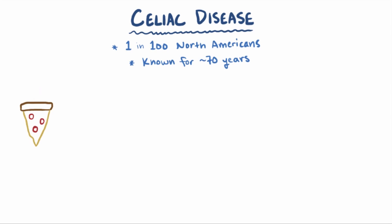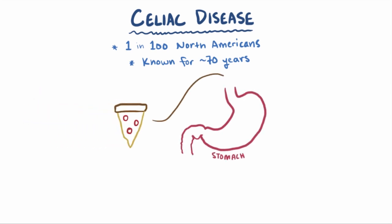So if somebody with celiac disease eats a wheat-based pizza, it's broken down in the stomach into gliadin and a whole lot of other stuff. Gliadin's a tough little bugger, though, and resists being broken down by all sorts of enzymes.